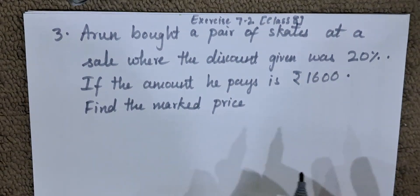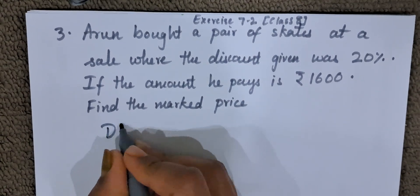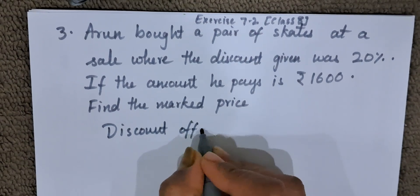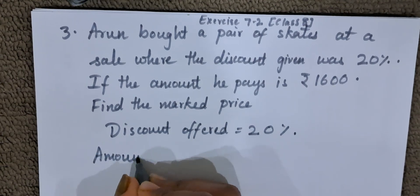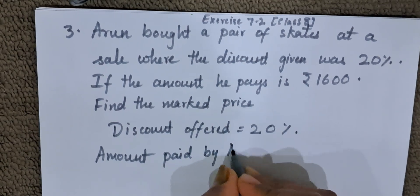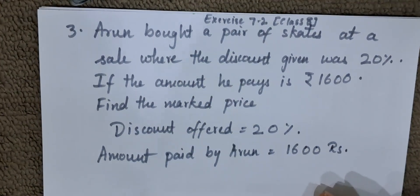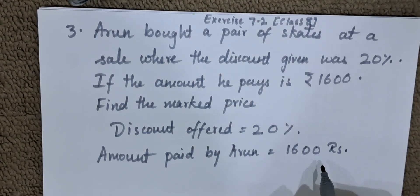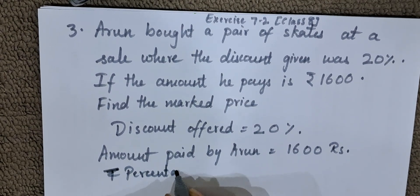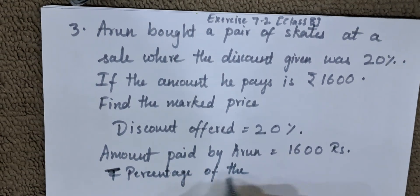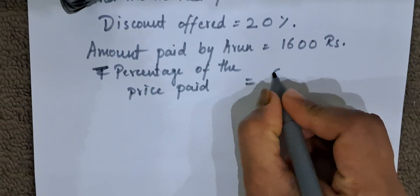Today we will be doing a very easy cross multiplication method to find out the full price. What are the given conditions? Discount offered is 20%, and amount paid by Arun is Rs. 1600. In that, 20% of discount was applied. That means he has paid 80% of the total amount. Percentage of the price paid — he paid 80% of the whole amount.